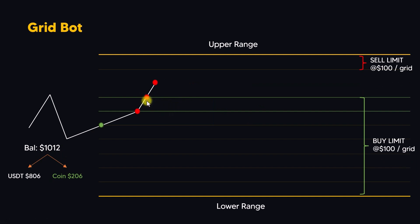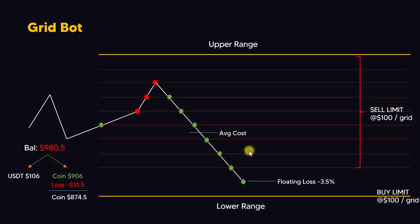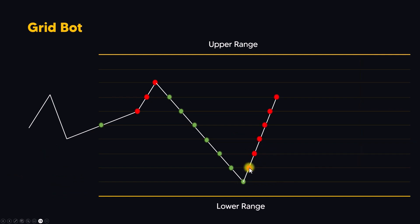Those two empty grid levels will be filled with another buy limit order of 100 dollars each, so the buy limit range gets wider and the sell limit range gets smaller. Now what happens if the price suddenly moves downward? The bot will make purchases on every grid level going down all the way to the lowest grid, and when the price goes back up the bot will sell what it has purchased.